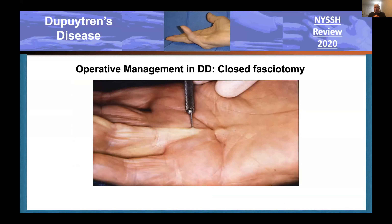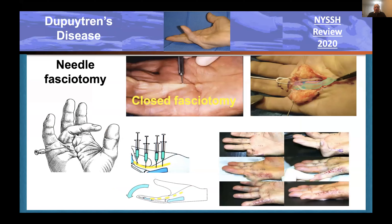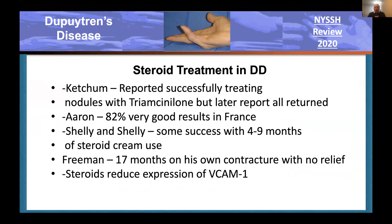The closed fasciotomy was used in the 1950s after World War II—simply jab a knife in and cut it in the office. The trouble was it cut neurovascular bundles and tendons. Later, the French developed needle aponeurotomy, which is very useful in appropriate patients, particularly for MP contractures. Recurrence is present with that approach as with all others. Steroids were thought to be helpful—Lynn Ketchum from Kansas reported using them successfully, but later reported they all returned. It does seem to make sense as steroids reduce expression of VCAM1, but it doesn't seem to work clinically.